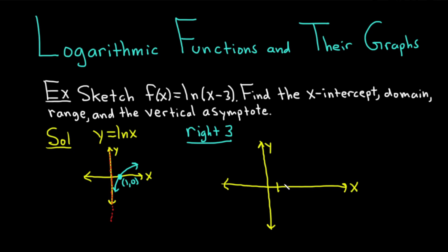So we have 1, 2, 3. I'm going to go ahead and draw it here in red. There's our vertical asymptote.